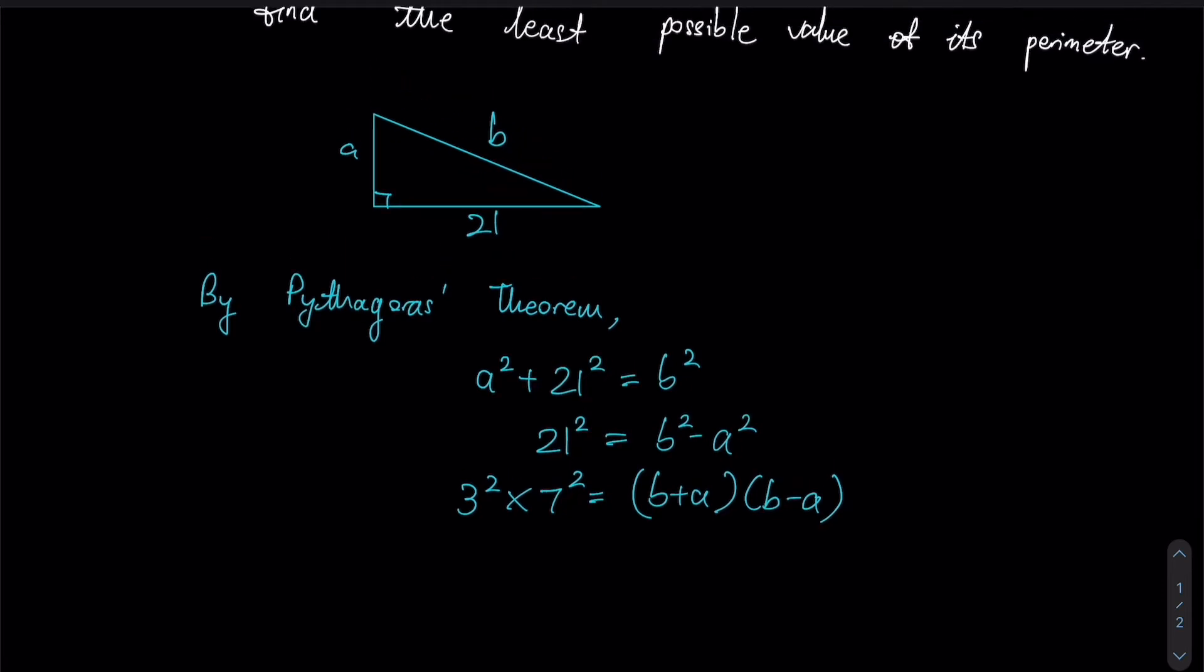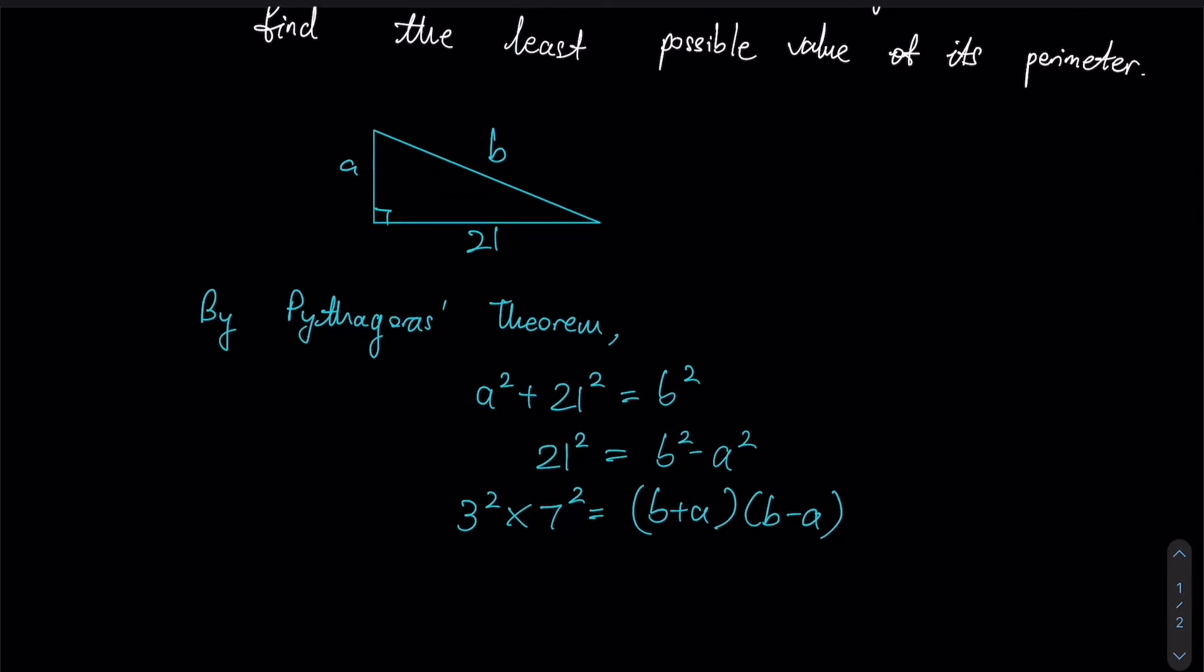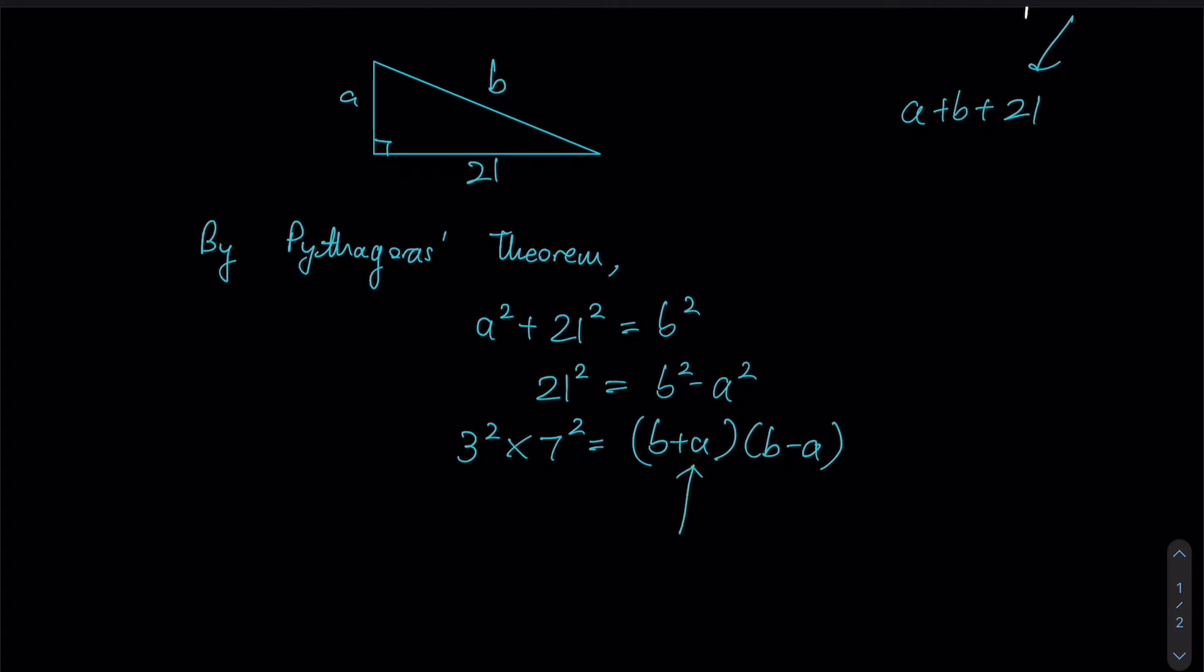So let us assess what we're trying to do over here. We're trying to find the least possible value of its perimeter. Given that the perimeter will be represented by the expression a + b + 21, since 21 itself is fixed, we can only minimize the value of a + b, and therefore we are actually trying to minimize this. If I try to make b + a the smallest, we would try and make b - a the biggest.